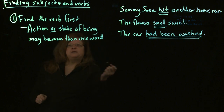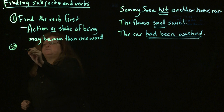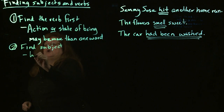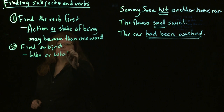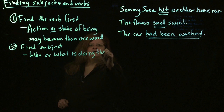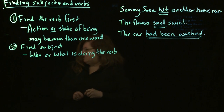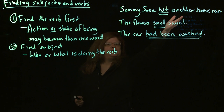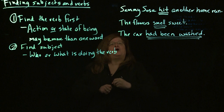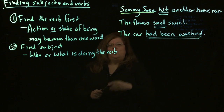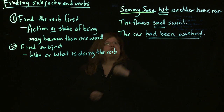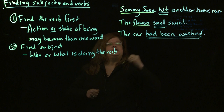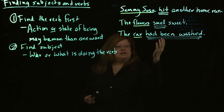Now, once you've found the verb, it becomes easier to find the subject. The subject is going to be who or what is doing the verb. So when we're looking for the subject, we can look at 'Sammy Sosa hit another home run' and ask: who or what hit another home run? The answer is Sammy Sosa. Or we can say who or what smells sweet — it's the flowers. And who or what had been washed — it's the car. So that lets you know that's your subject.